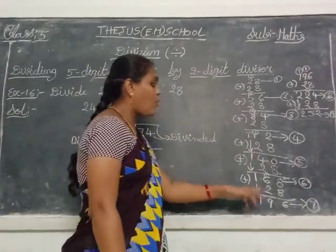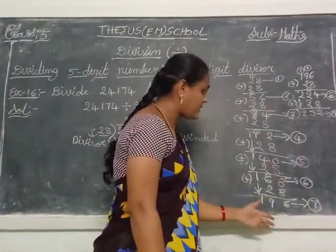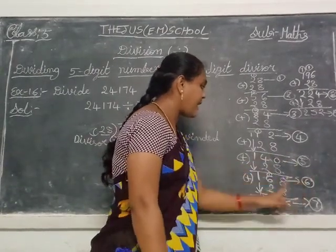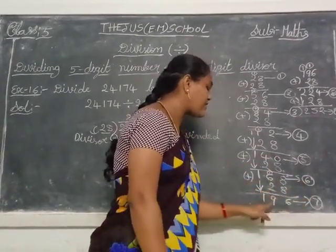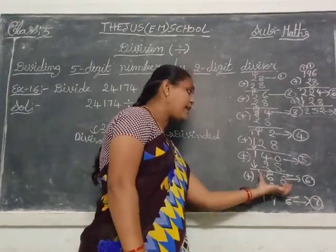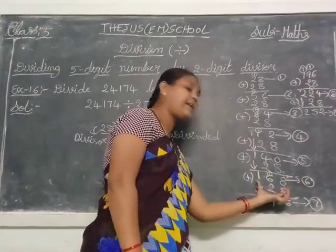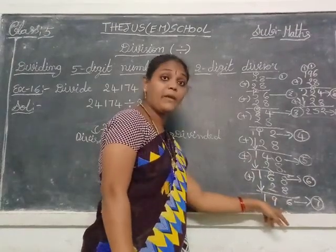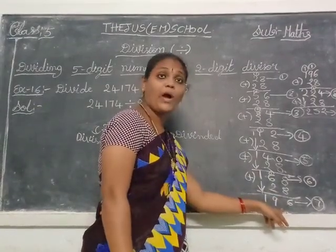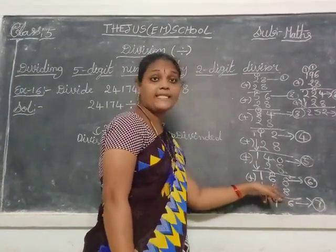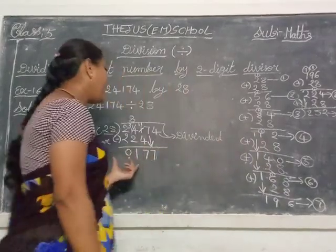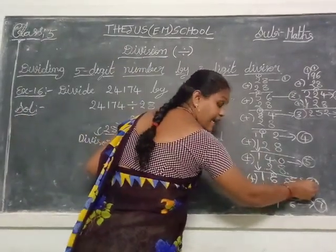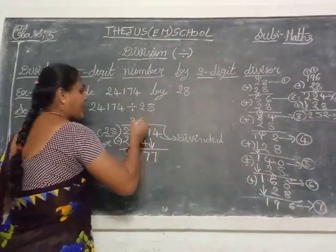Already we built the table. 177 — where does it fit? 5 times is 140, 6 times is 168, 7 times is 196. 177 is between 168 and 196. 196 is too big. So 168 is the nearest number, which is 6 times. So write 6 in the quotient and write 168 below.